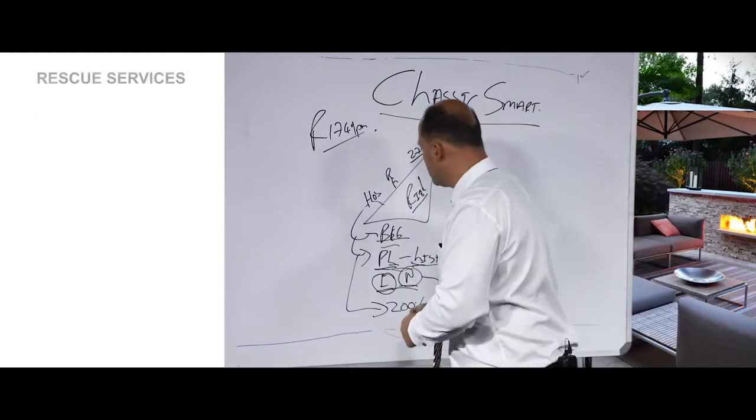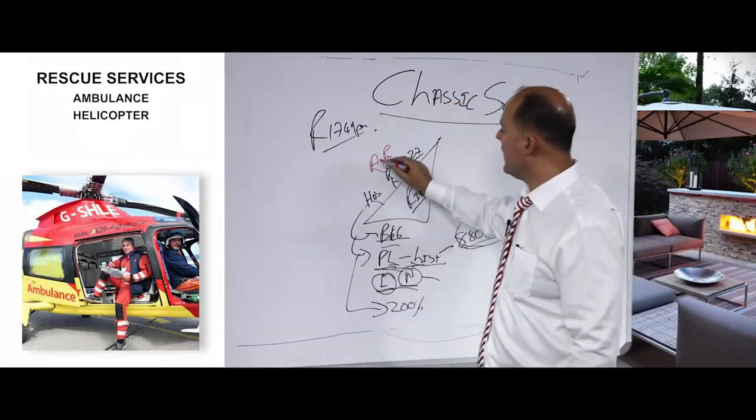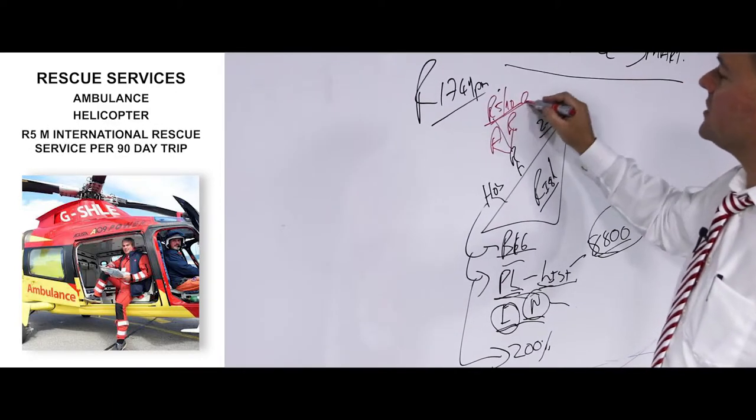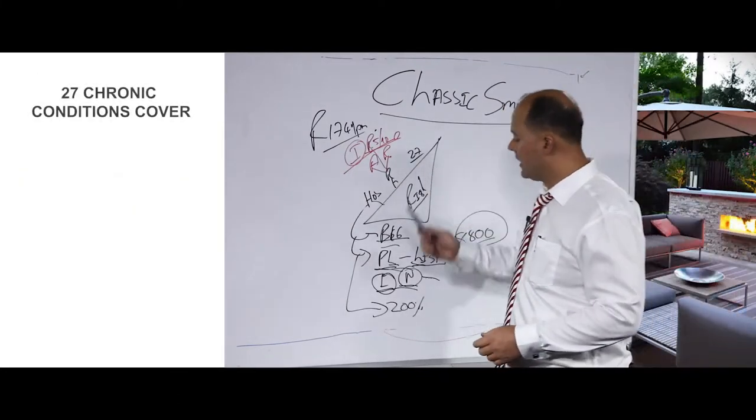In terms of rescue services, you also get air and road cover, ambulances and helicopters, and you will be covered for five million rand per 90 days journey overseas, and that will be funded out of the international benefit.